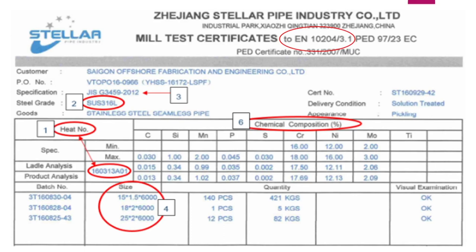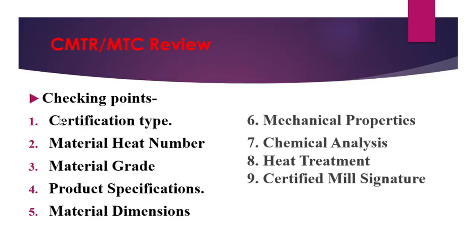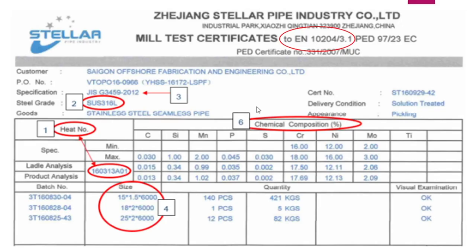The certificate is certified by the manufacturer's own representative, the independent QC department or Quality Assurance department. This is the responsible person who certified this certificate - that's why we write the 3.1 certification. If this certificate is certified by a third party, then it should be 3.2. So the certification type here is 3.1. The first checking point is the certification type: EN 10204 3.1.